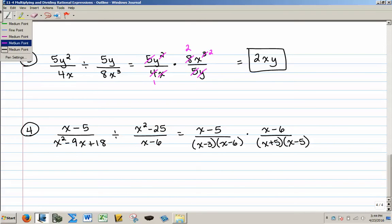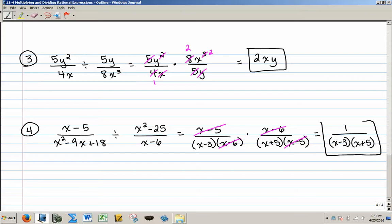And now that everything is factored, now I can do some canceling. My x minus 5s will cancel. My x minus 6s will cancel. And this is a little curious. It kind of looks like I have nothing left on top, but actually there is a 1 on top there. So make sure you put a 1 on top, and on the bottom I have an x minus 3 and an x plus 5. And that is my quotient of those two rational expressions.